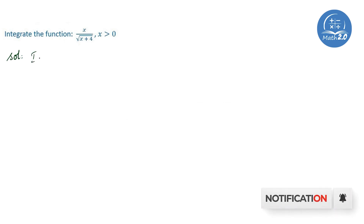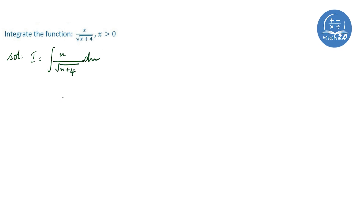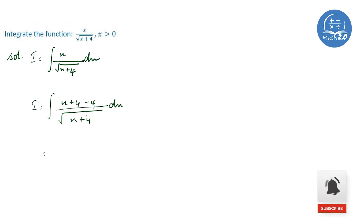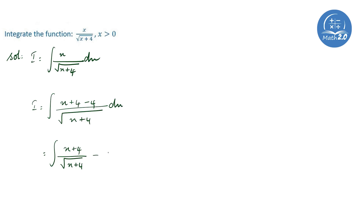So, we have I is equal to the integral of x divided by the square root of x plus 4. I am going to write the numerator as x plus 4 minus 4, divided by the square root of x plus 4, dx. We will be getting x plus 4 by the square root of x plus 4, minus 4 by the square root of x plus 4.